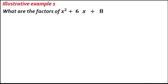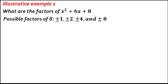Let's have an example. Illustrative Example 1: What are the factors of x squared plus 6x plus 8? Get the possible factors of the constant 8. The possible factors are positive or negative 1, positive or negative 2, positive or negative 4, and positive or negative 8. We will choose from these to find the factors of the given polynomial.